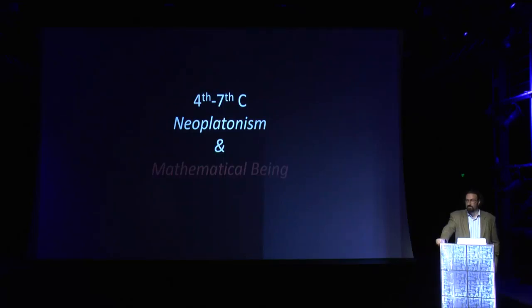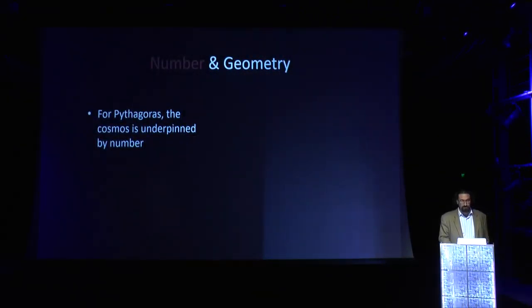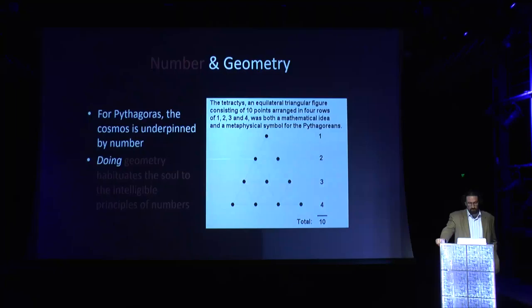Many who study Islamic art and architecture discuss the influences of Neoplatonism in terms of emanation theory or other aspects, but I want to shed light on the question of mathematical being because it was discussed for several centuries and then carried over into the Islamic tradition. For Pythagoras, the cosmos is underpinned by number, and the act of doing geometry habituates the soul to the intelligible principles underpinning those numbers.